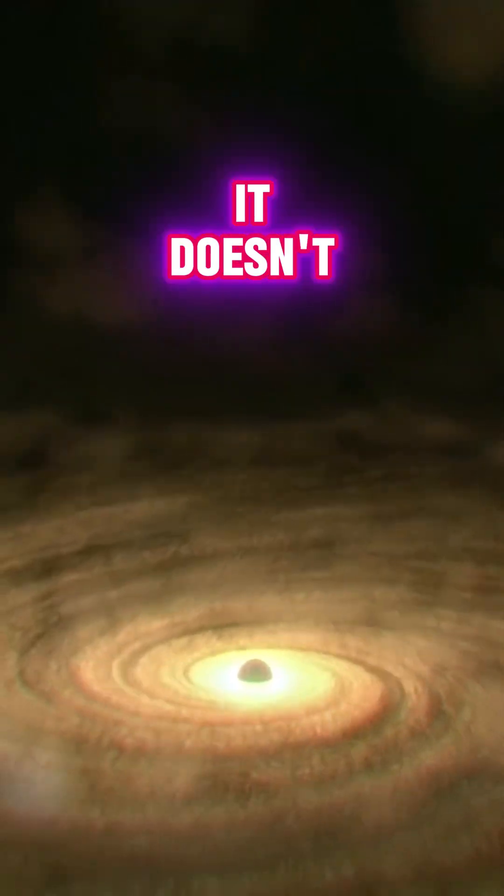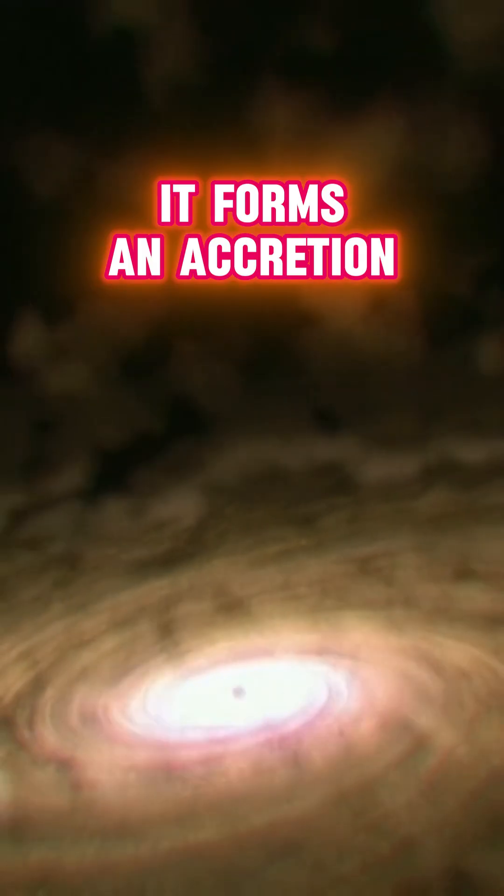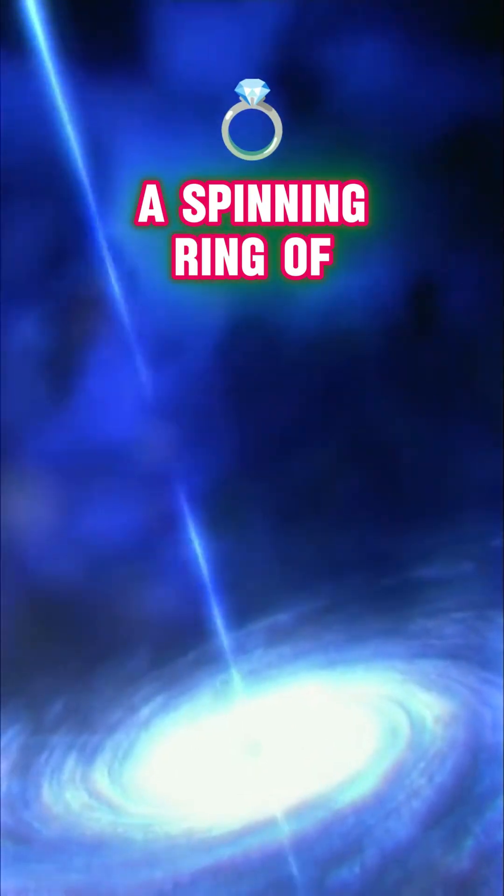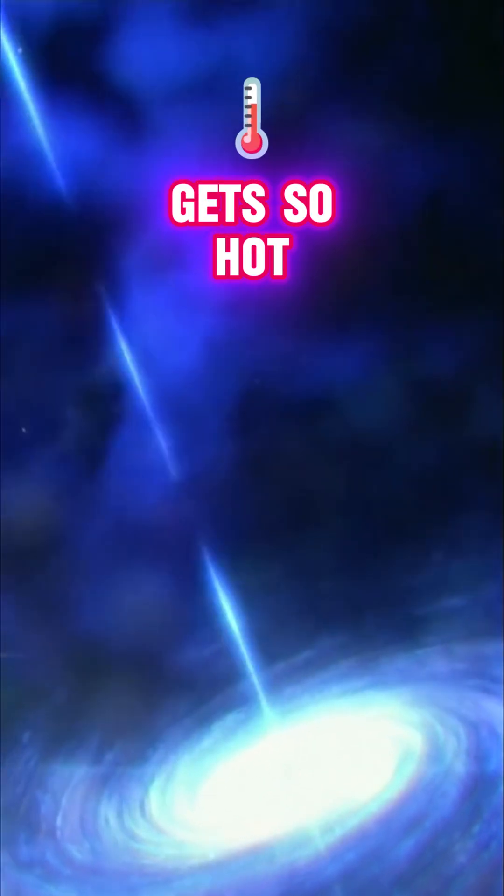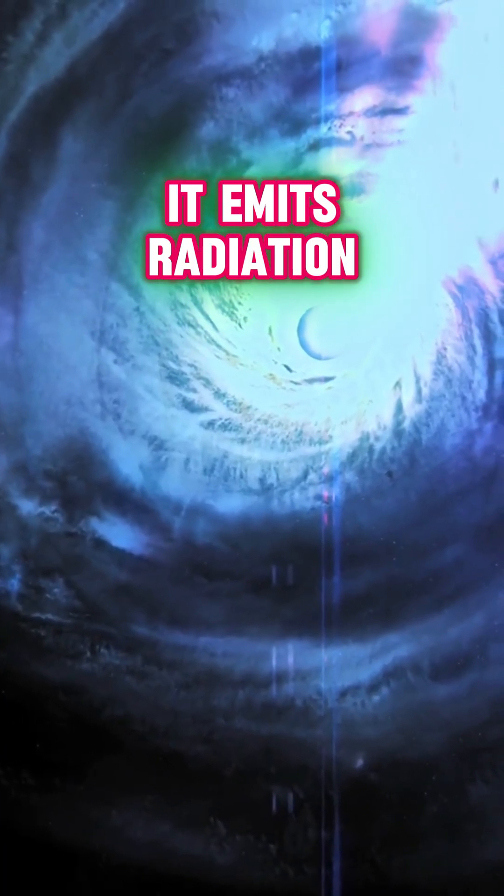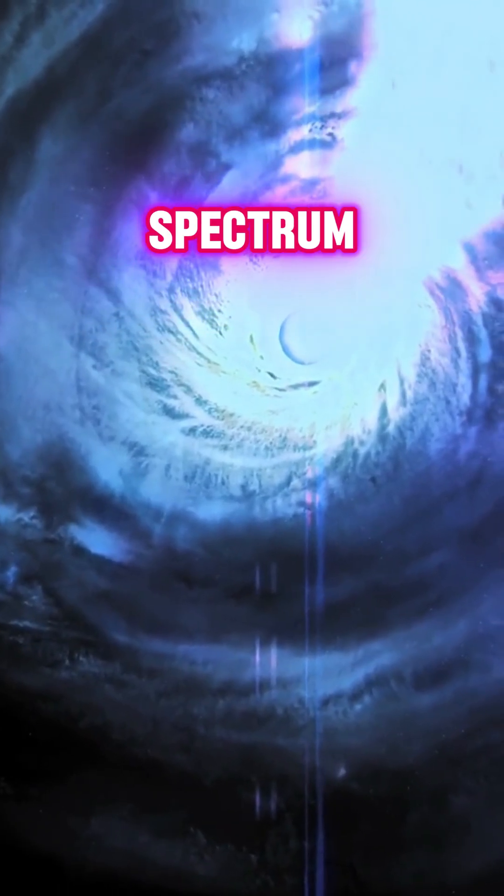When matter falls in, it doesn't just vanish. It forms an accretion disk, a spinning ring of gas and dust that gets so hot, it emits radiation across the electromagnetic spectrum.